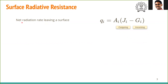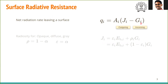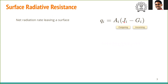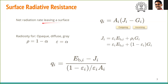Recall that the net radiation leaving a surface is qi. That is nothing but the total outgoing flux — which is the radiosity — minus the total incoming, which is the irradiation. So Ai times (outgoing minus incoming) is the net heat due to radiation that leaves the surface. 'Leaves' is important — keep that in mind.